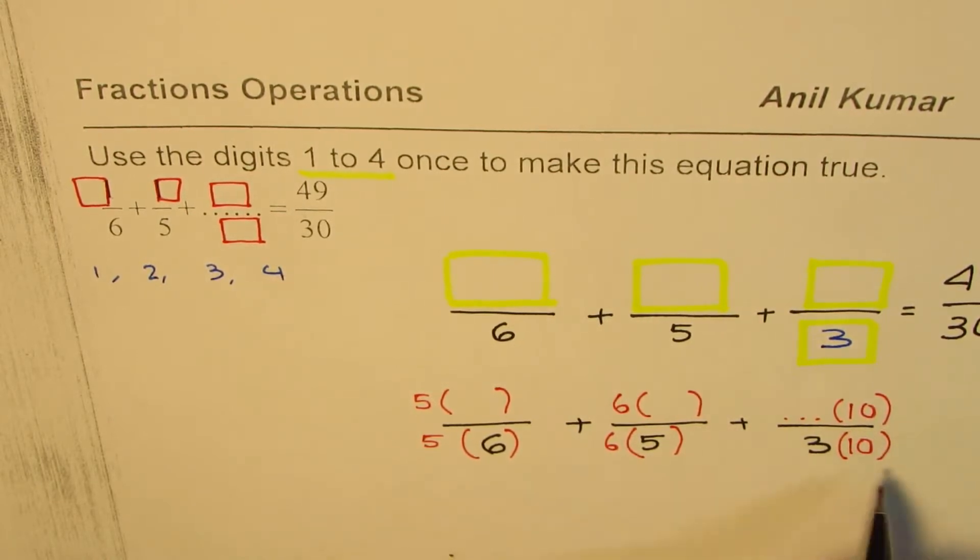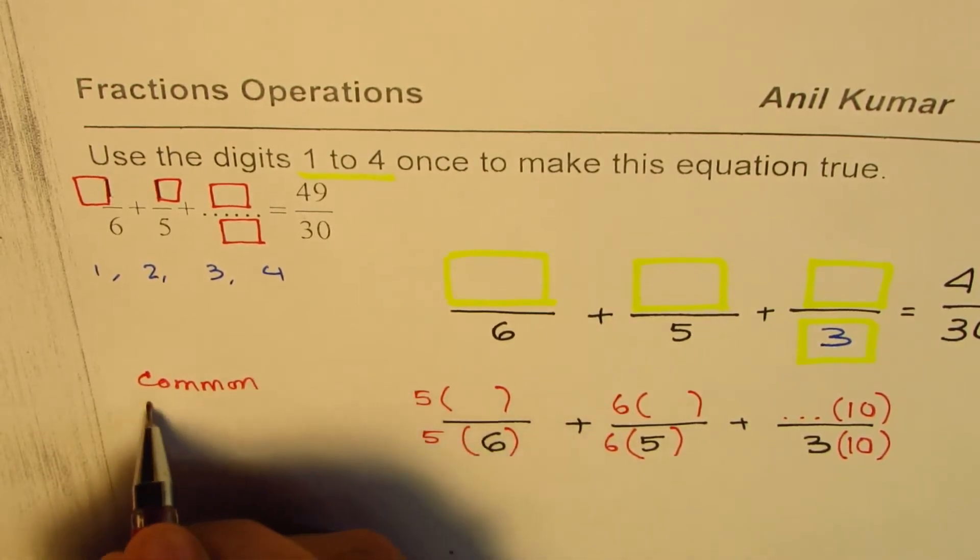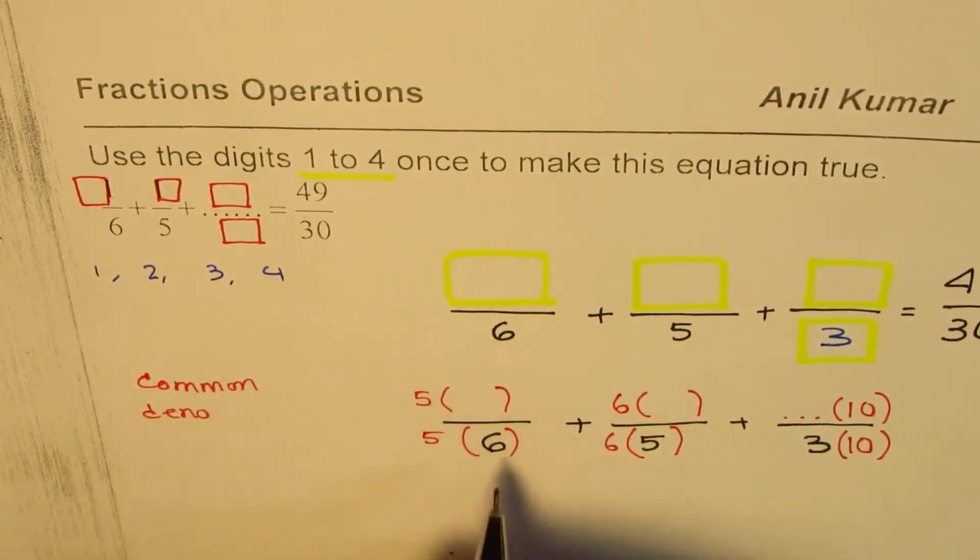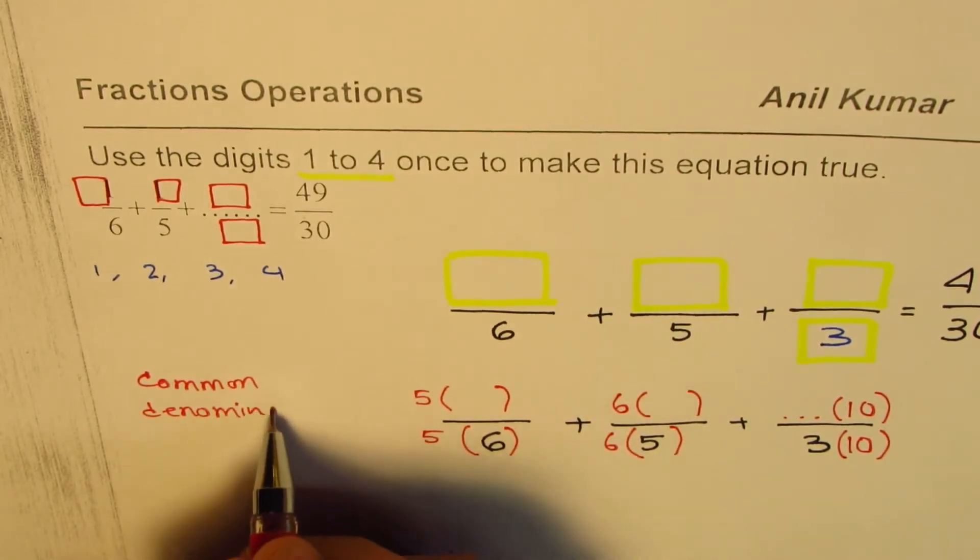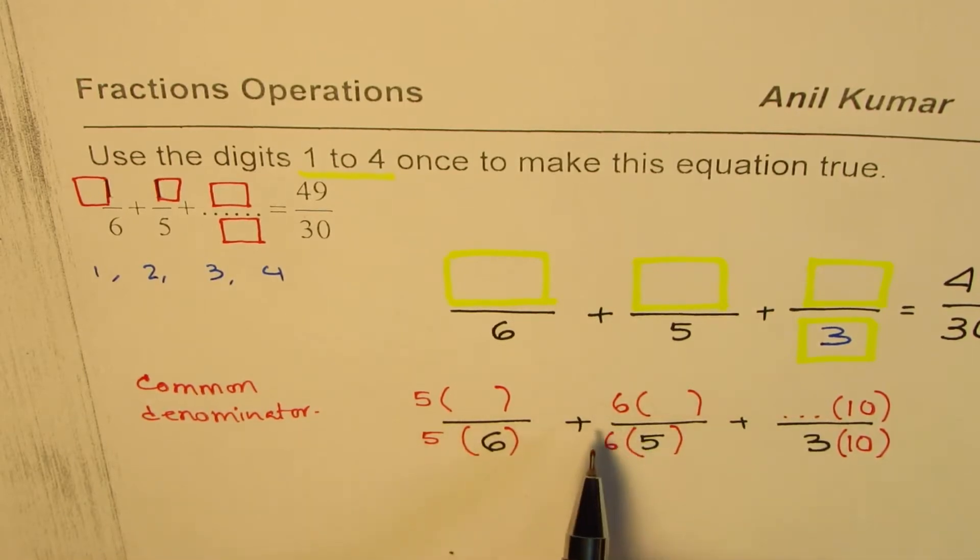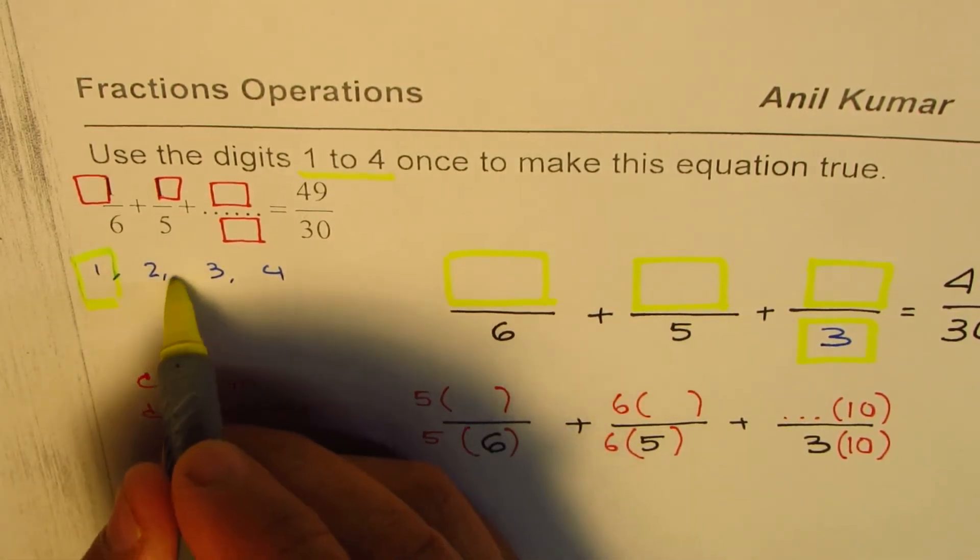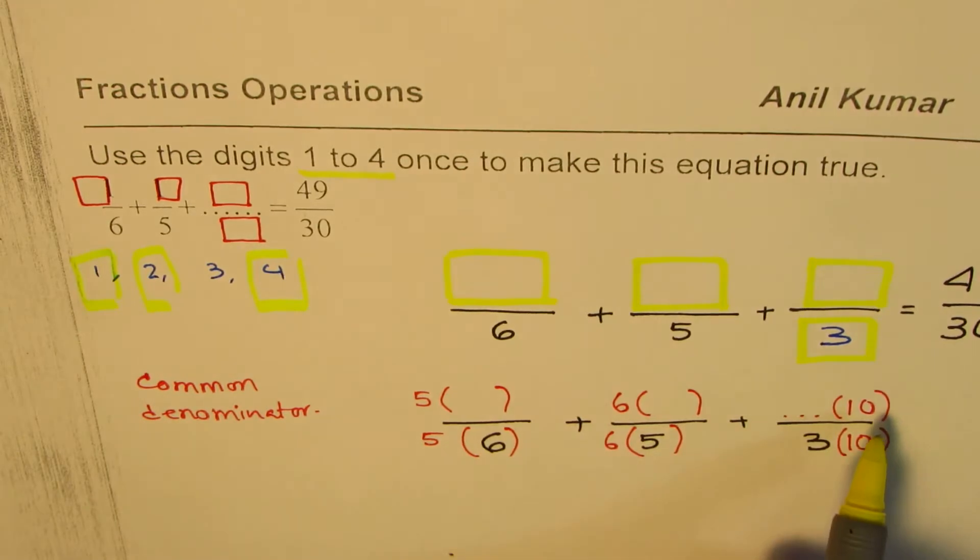I have to multiply both numerator and denominator by the same number to get common denominator. So what we are trying to do here is to get common denominator. Only when you have common denominator you can add fractions. So that is the strategy.